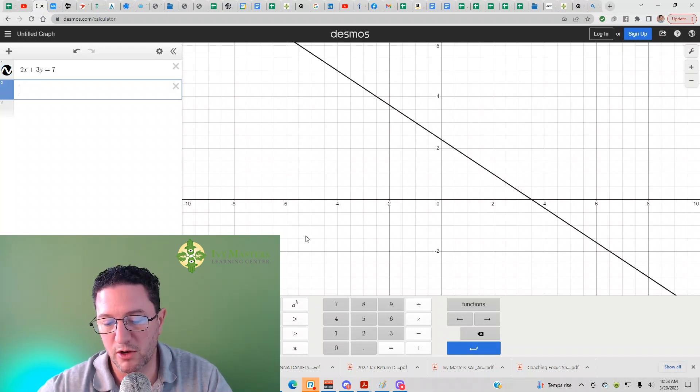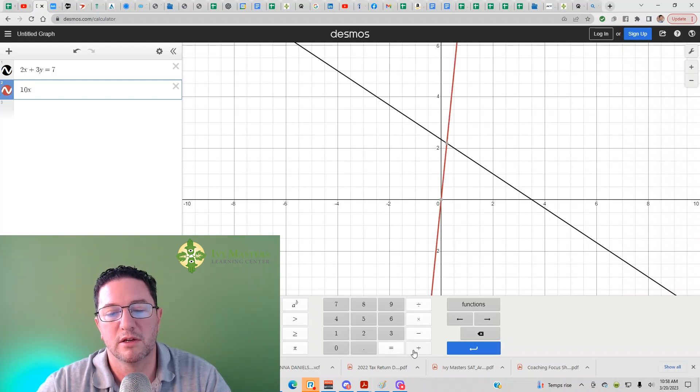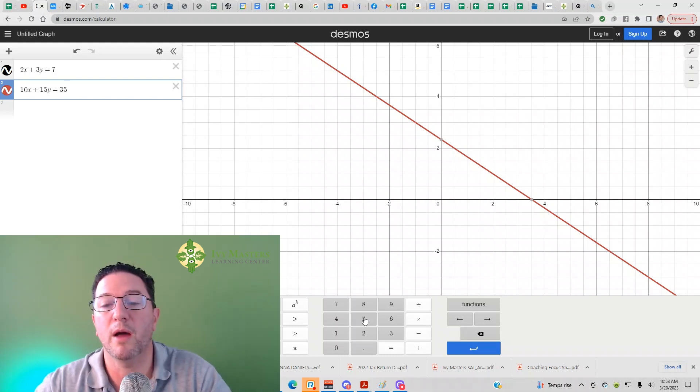Our second equation that we saw was 10X plus 15Y equals, now 35, but I'm going to put the 3 in first. See, I got a red line. When I put the 5 in, look at what happens. Plus 35. It went right over the top of the other line.